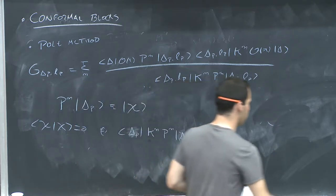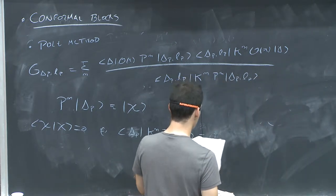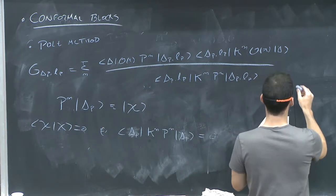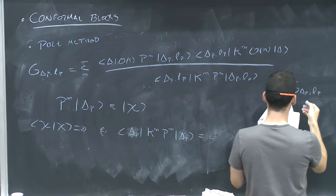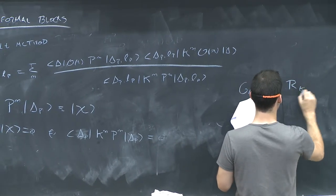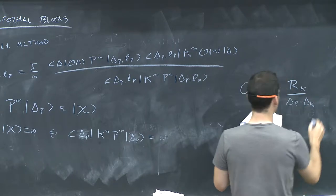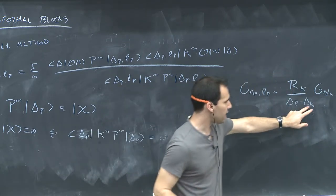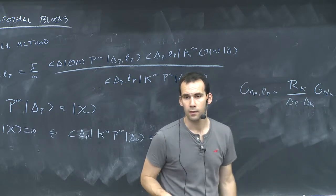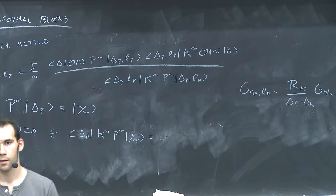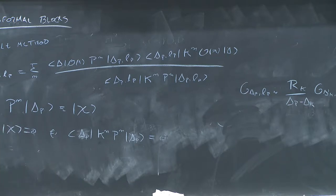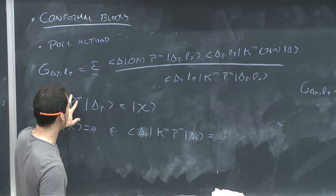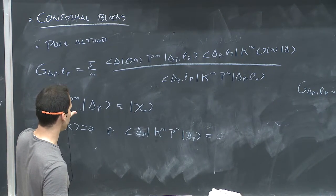Why is this important? It's important because it tells you that as you dial delta_P to the appropriate value — the value where there's a pole — you expect to see this structure. Delta_K is the dimension of the state which is null. P to the n acting on delta_P should also be a primary.